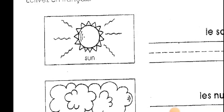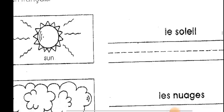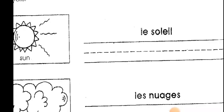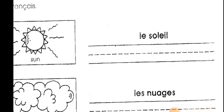Let's have a look at the first word. The first item which obviously brings sunlight is called the sun in English. And in French, the sun is called le soleil. Could you please repeat? Le soleil. Very good.